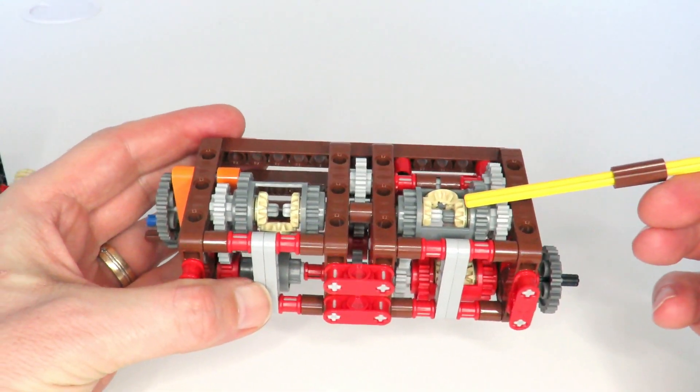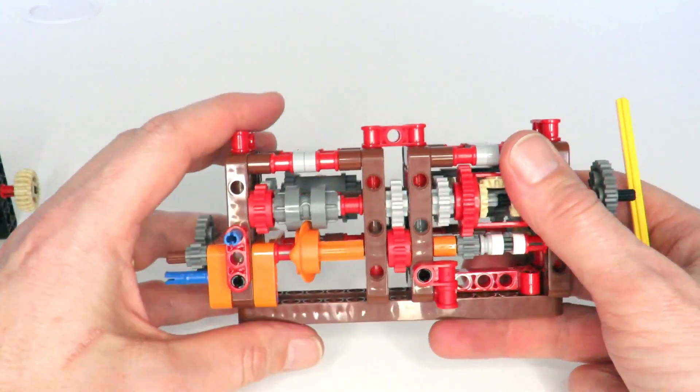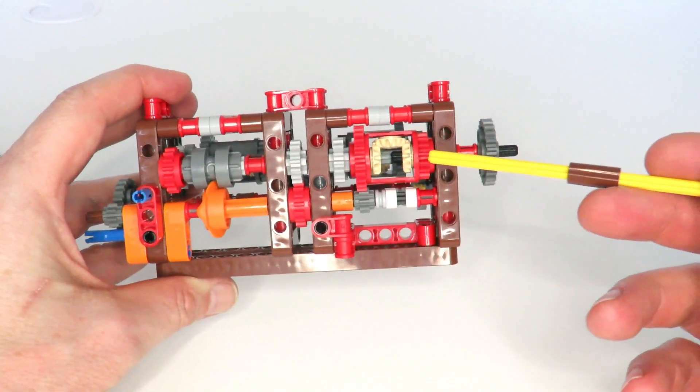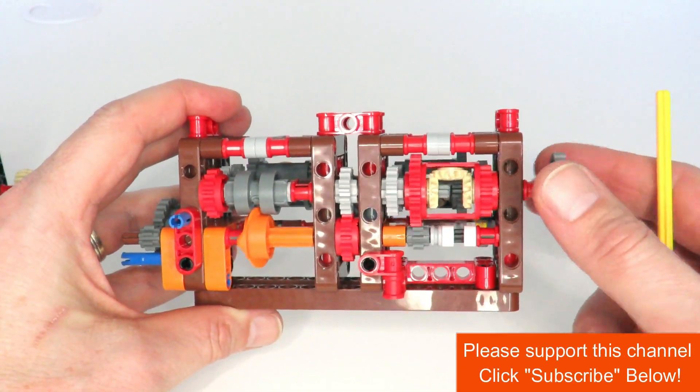Now the core idea of this gearbox is that it uses a differential on the output over here to add together a constant speed from the input and another speed selected by the orange rotary catch selector.